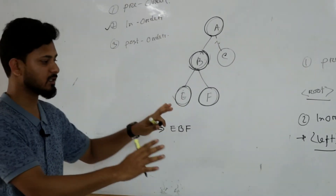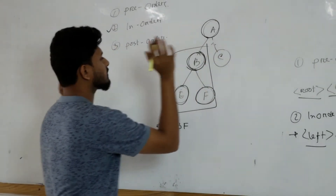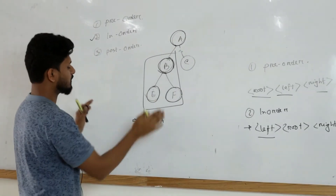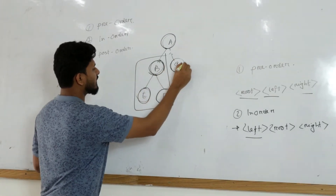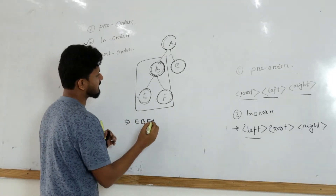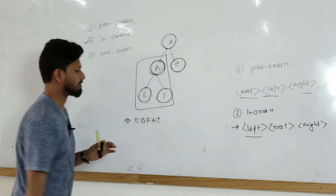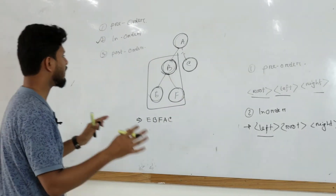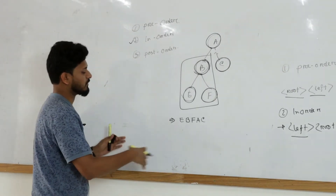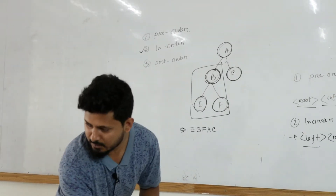The left subtree part is complete. Now we need to go to the root — we write A. Then we go to the right. The right has only one child, C, and C has no more children, so we write C. This is the simple procedure for in-order. Using this simple algorithm you can solve any binary tree.